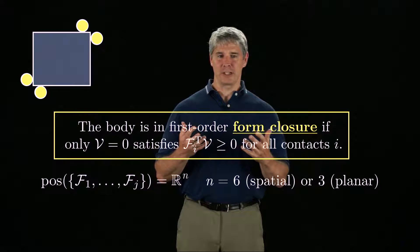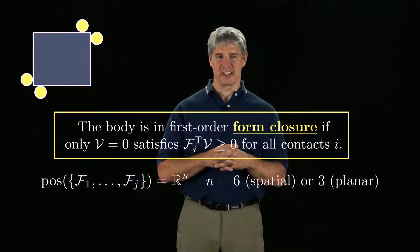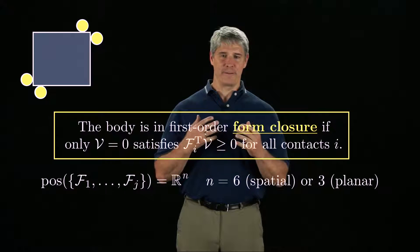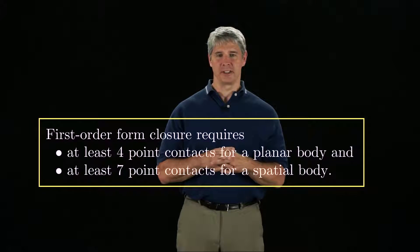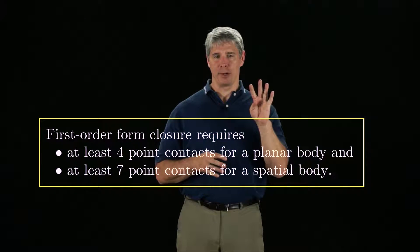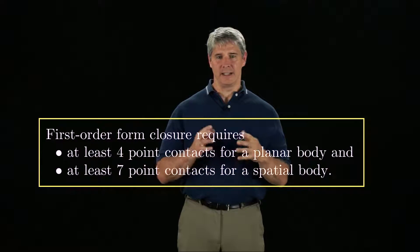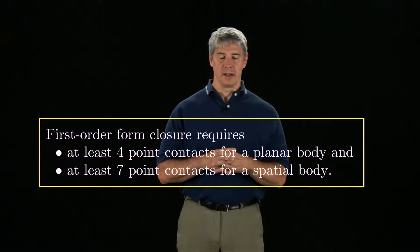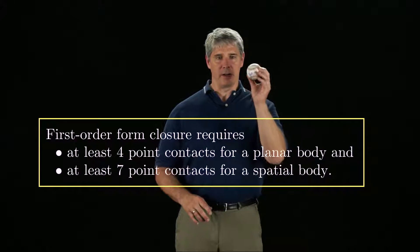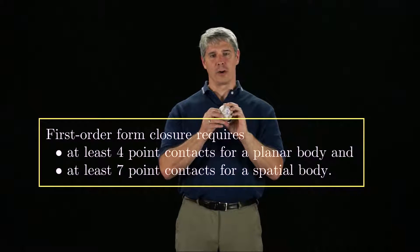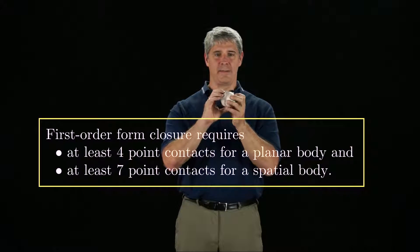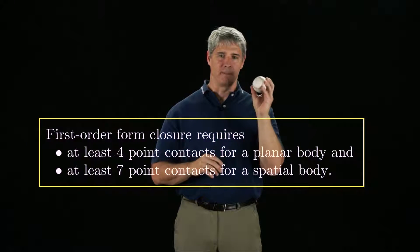Remembering that at least n plus one vectors are needed to positively span an n-dimensional space, this means that first-order form closure requires at least four-point contacts for a planar body and at least seven-point contacts for a spatial body. These are minimum requirements. Some objects, like a sphere, cannot be form-closure grasped for any number of contacts, as there is no way to kinematically prevent rotation of the sphere.